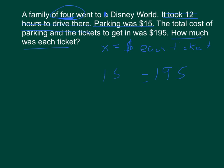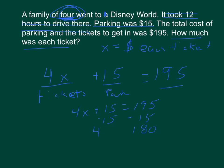Parking was $15, and we add that to the total cost of tickets. There were four tickets at x dollars each, so four times x gives us the ticket total. The equation is 4x plus 15 equals $195. We subtract 15 from both sides to get $180, so 4x equals $180. Dividing by 4 gives x equals $45. Each ticket to Disney World cost $45.